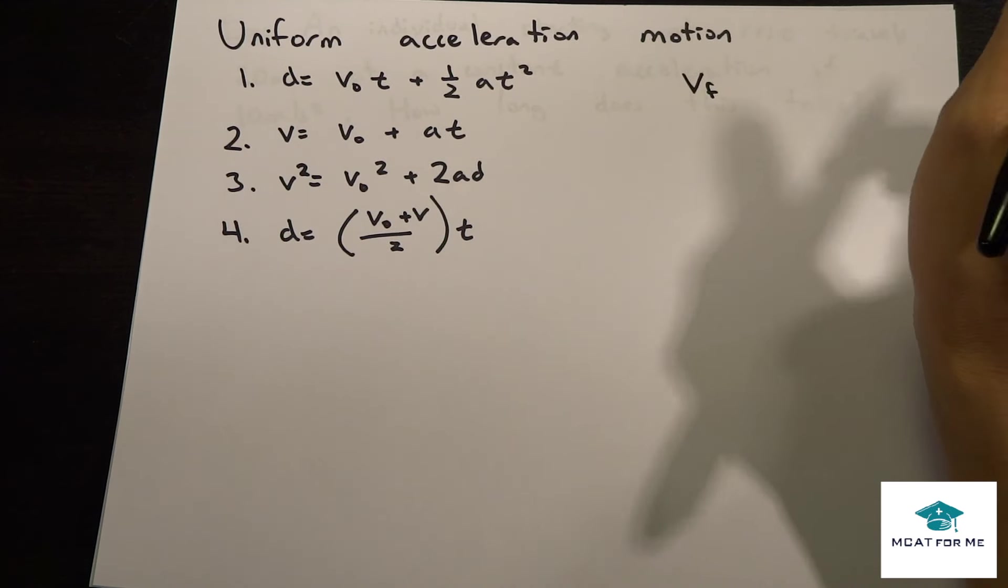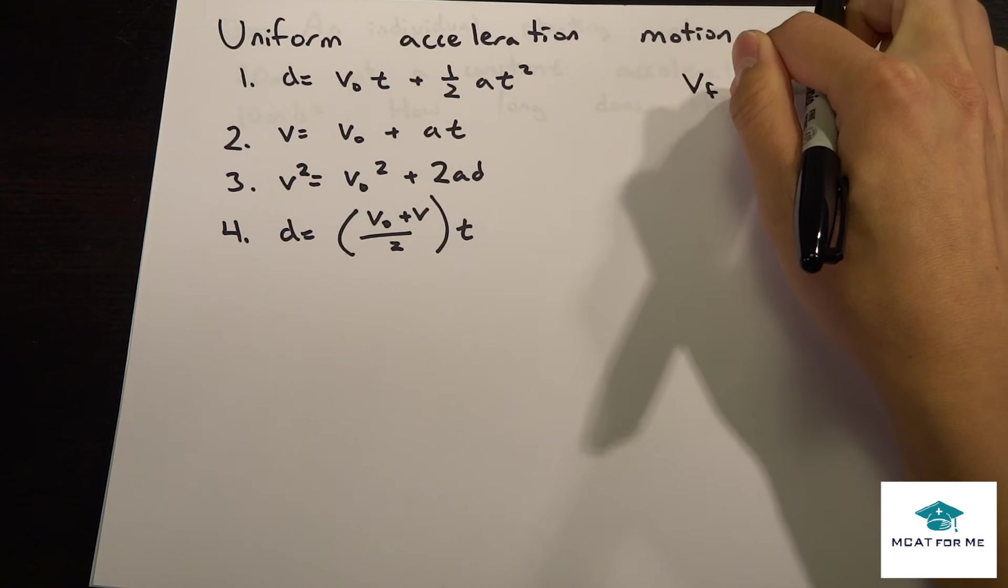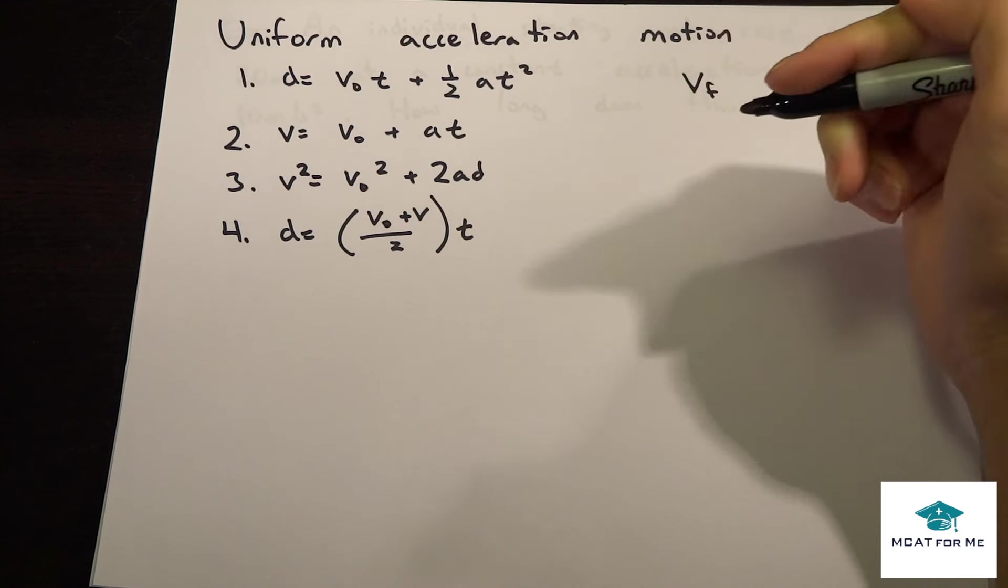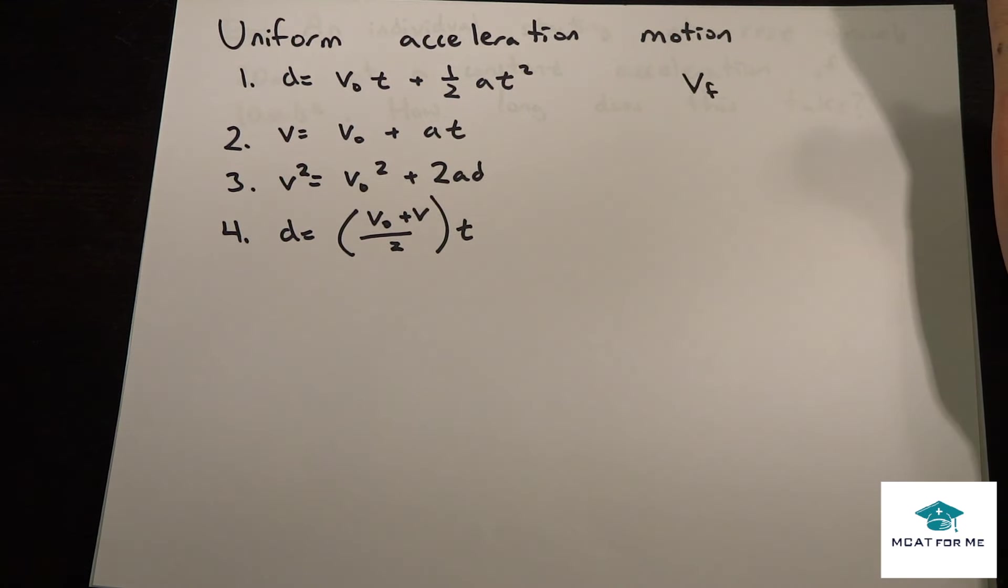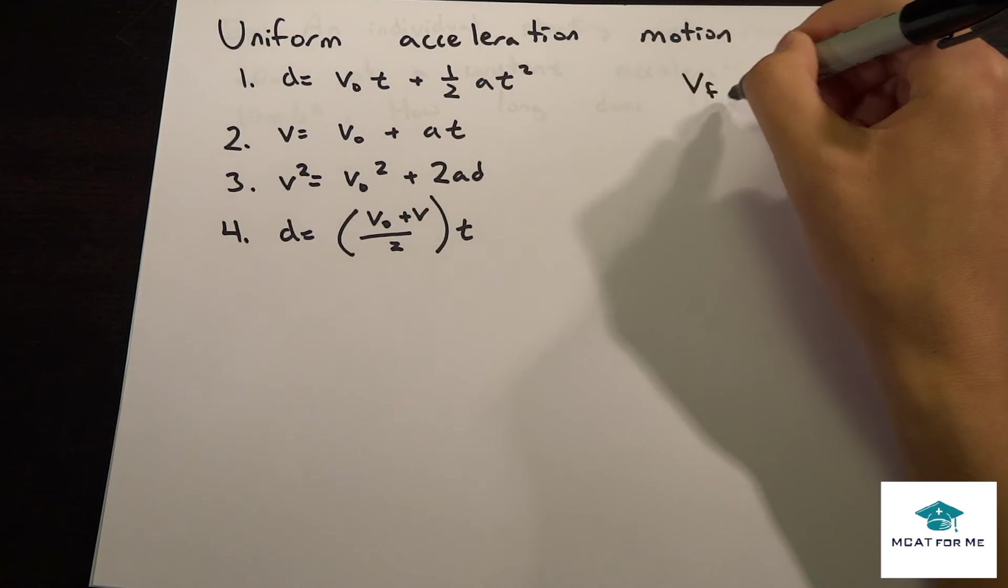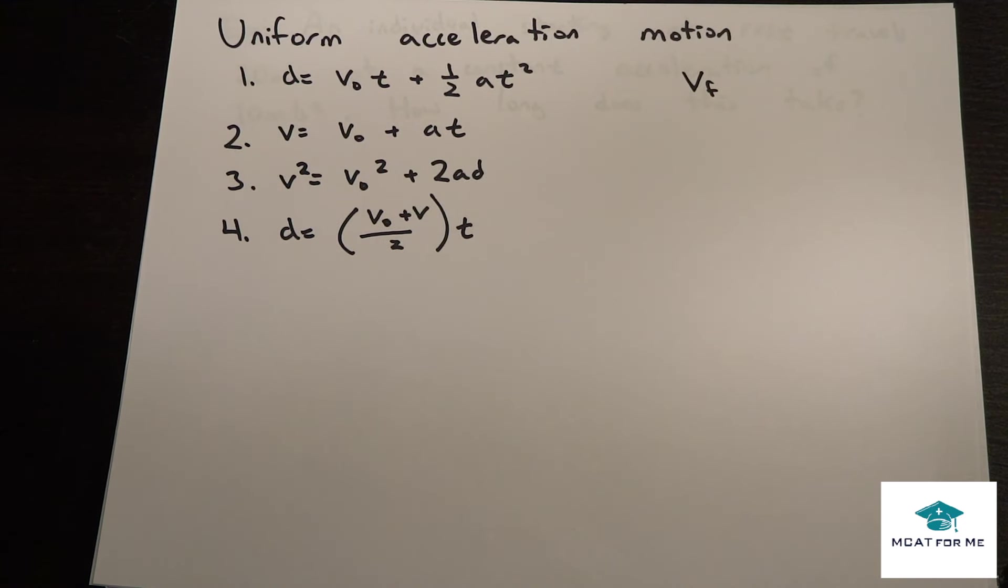And so that's important to know because it's important to know which one is not given so we know which equation we use because they will only give us a certain amount of the information. And whichever one they don't give us, we know that that's the equation that we're going to be using.